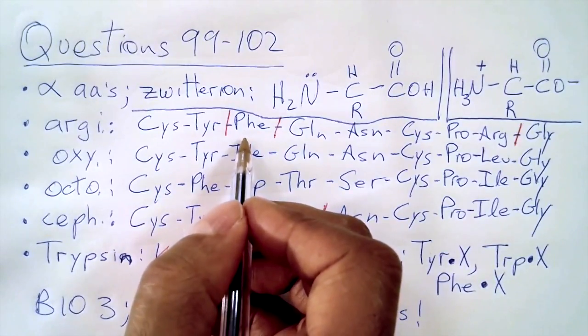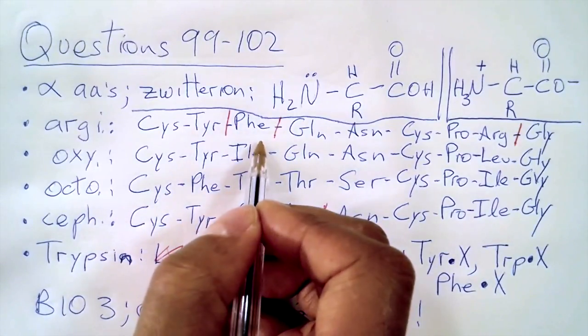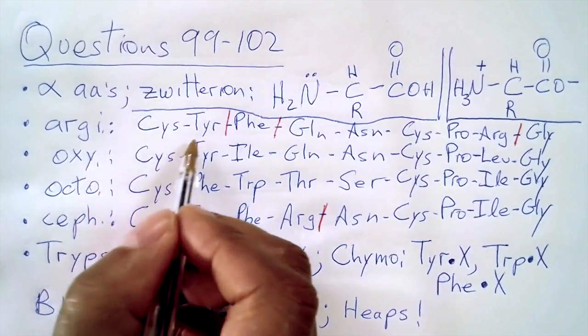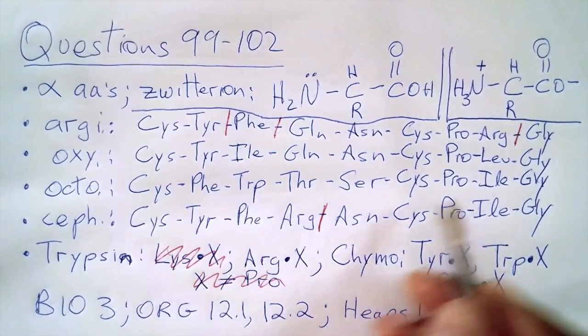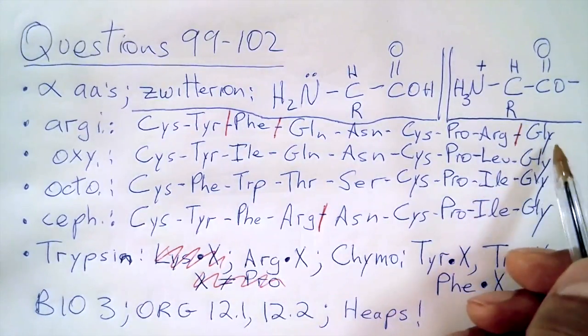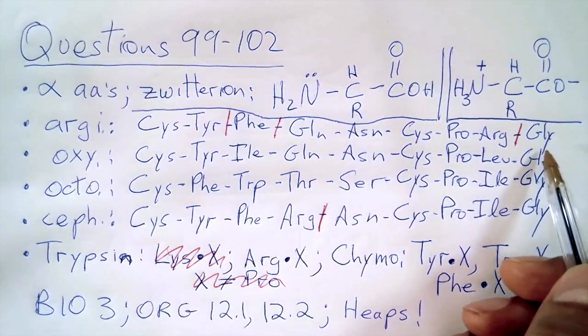Also, just for your interest, notice that phenylalanine will be isolated as well as a dipeptide over here. And also notice that if only the enzyme trypsin was given, you'd be able to isolate glycine as an amino acid.